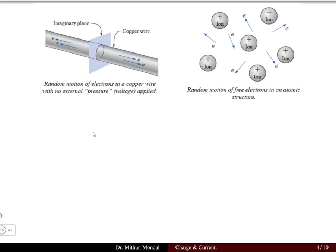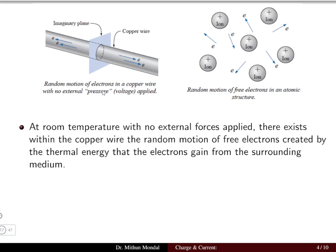Let us take an example of a copper wire. An imaginary plane is cut so that a circular cross-section is taken to understand how current or electrons flow through it. When the temperature is at room temperature and no external forces are applied, there will exist a random motion of free electrons in the copper wire.